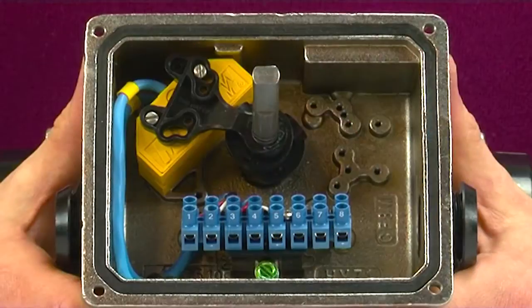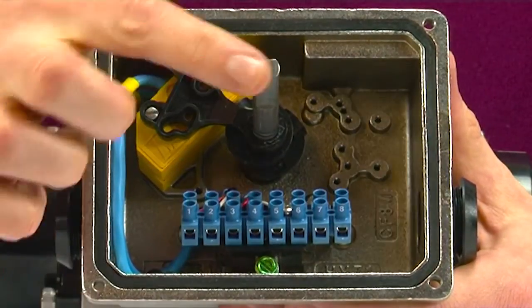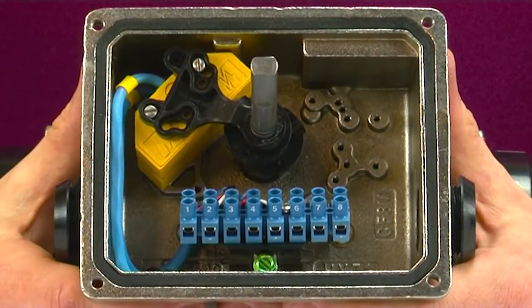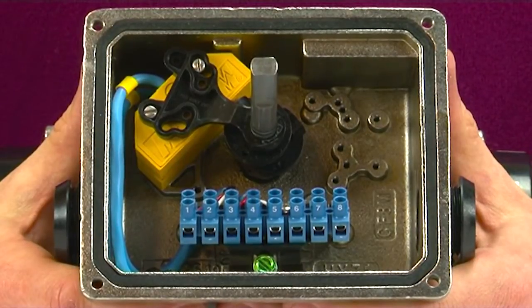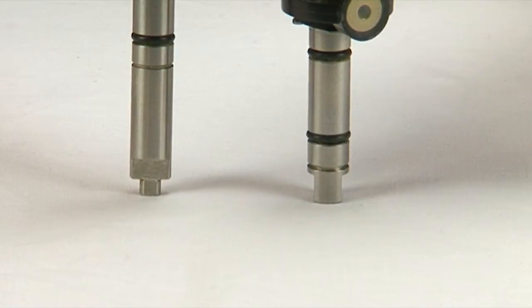This time we're going to be looking at the shaft arrangement inside the Westlock switchbox. Unlike many of our competitors, the shaft connecting the Westlock switchbox to the actuator is stainless steel. It comes with Namur or standard pattern connection to fit almost every actuator on the market.